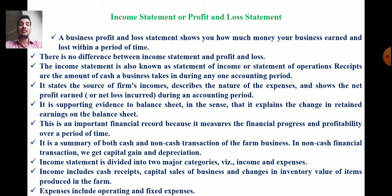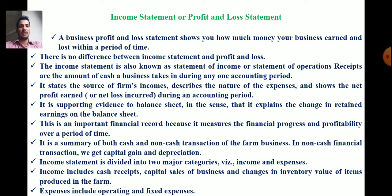The income statement states the source of income — it shows the different sources of a firm's income, describes the nature of expenses, meaning how you have invested your money on different activities, and shows the net profit earned during a particular accounting period. It shows the firm's net income, nature of expenses, and the profit earned. It is a supporting evidence to the balance sheet in that it explains the change in retained earnings on the balance sheet.